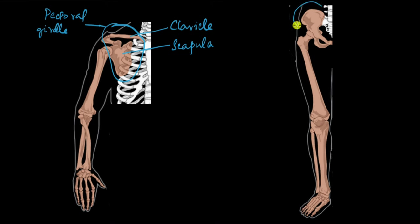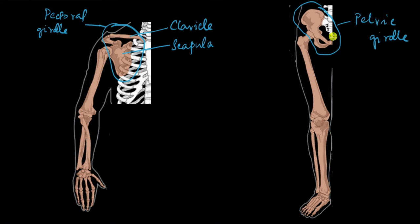The parallel of the pectoral girdle for the leg is the pelvic girdle. The word pelvic originally means a basin. The pelvic girdle on both the right and left sides forms a basin-like hollow space inside our body, hence the name pelvic. Pectoral means chest, and the pectoral girdle is very close to the chest. Just as the pectoral girdle connects the arm with the axial skeleton, the pelvic girdle connects the leg with the axial skeleton. The bone the pelvic girdle is made of is called the hip bone or the coxal bone, which is made up of three fused bones.